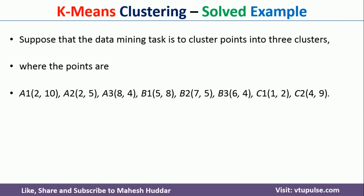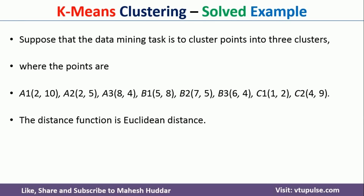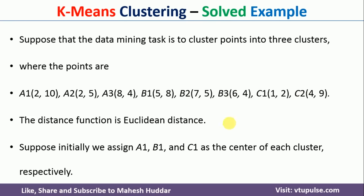In this case, we have been given eight data points: a1, a2, a3, b1, b2, b3, c1, and c2. We need to use Euclidean distance and the k-means clustering algorithm. We have also been given initial centroids — a1, b1, and c1 — which should be considered as the initial centroids. If initial centroids are not given, you can select any of these points as the initial centroids and then continue applying the k-means algorithm.